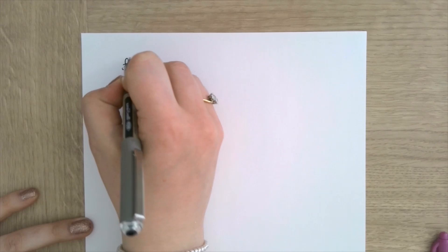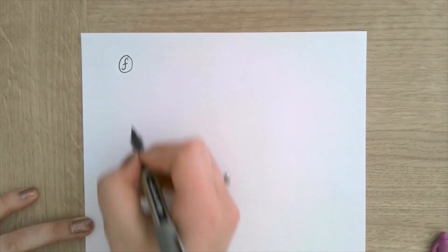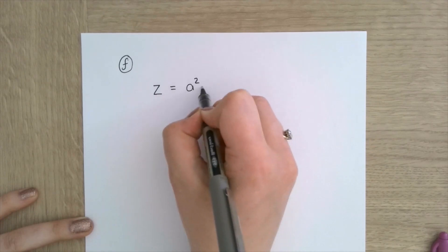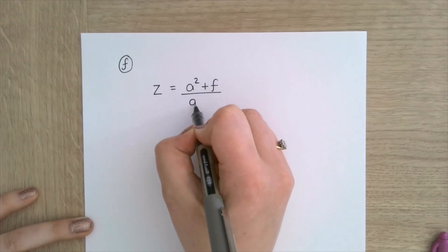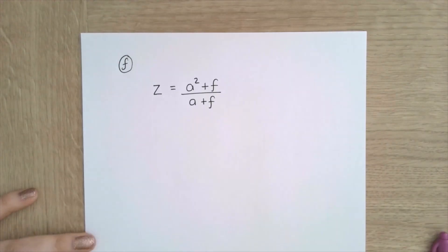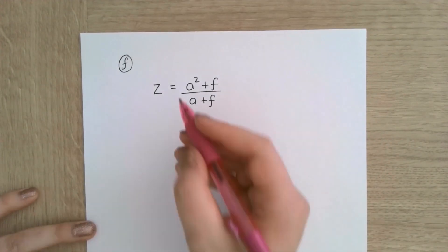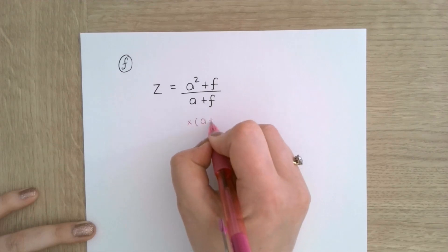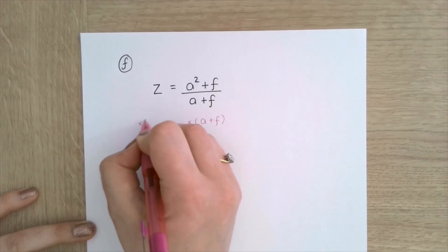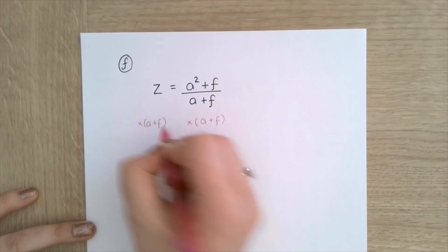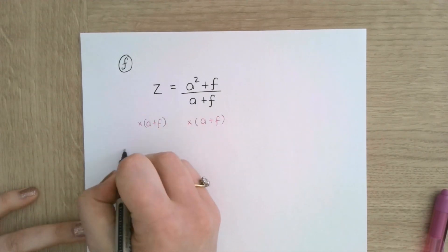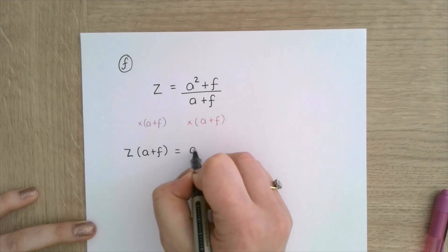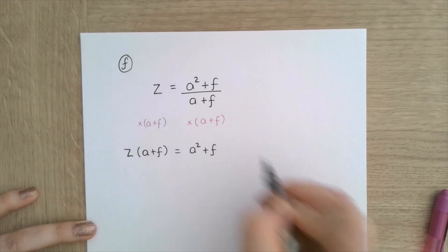Next one I'm making f the subject. The formula is z equals a squared plus f all over a plus f. First thing I'm going to do is multiply by the whole denominator, a plus f, remembering to keep it in brackets. So I get z brackets a plus f is equal to a squared plus f.